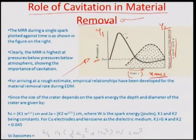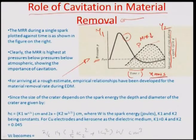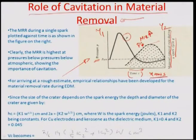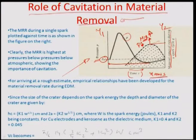A very interesting observation is that the MRR is highest when the pressure generated by the medium on the surface is the lowest — even below atmospheric pressure. This is a real plot of pressure versus MRR on the tool surface. There is always a tendency of electrons emanating from the cathode to create a compression pressure wave on the anode (workpiece) surface. This electron pressure comes from the medium and impinges on the workpiece surface.